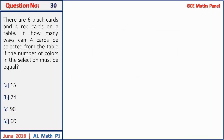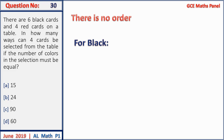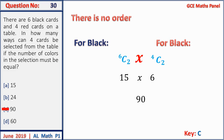Question 30: there are 6 black cards and 4 red cards. In how many ways can 4 cards be selected if the number of each color must be equal? We need 2 black and 2 red. Black: C(6,2) = 15; Red: C(4,2) = 6. Total ways = 15 × 6 = 90. Answer C.